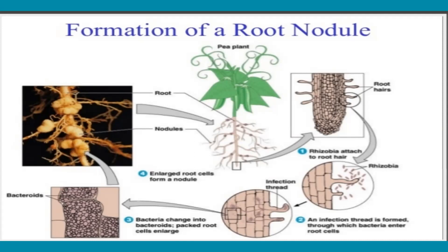An infection thread is formed through which bacteria enter the root cells. This is followed by organization of bacteria into a thread-like alignment, also known as the infection thread. The infection thread moves inwardly and penetrates into the cortex and even to the pericycle. Recent studies show entry is not essentially into tetraploid cells. Electron microscopy shows the infection thread is made up in part of the greatly enfolded plasmalemma of the invaded cell. The bacteria then change into bacteroids.